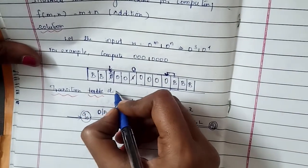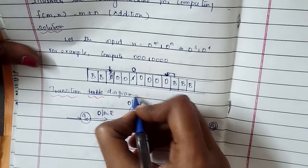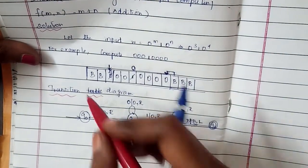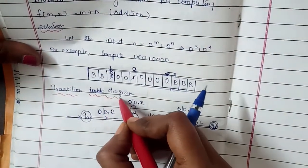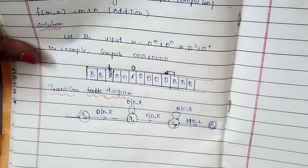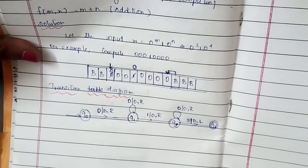The final state is q3. This is the transition diagram for the addition operation.